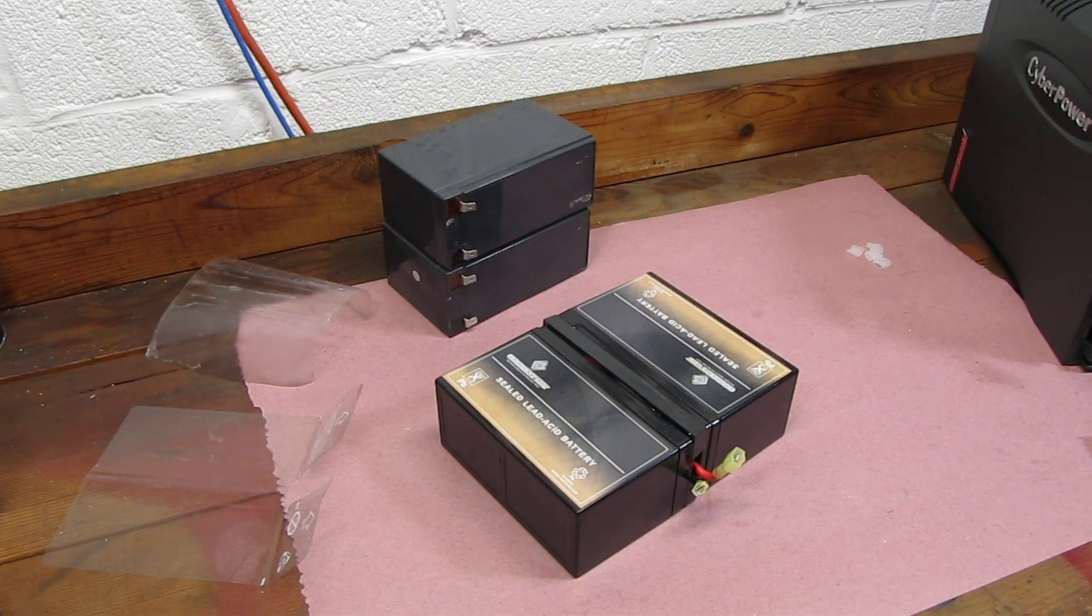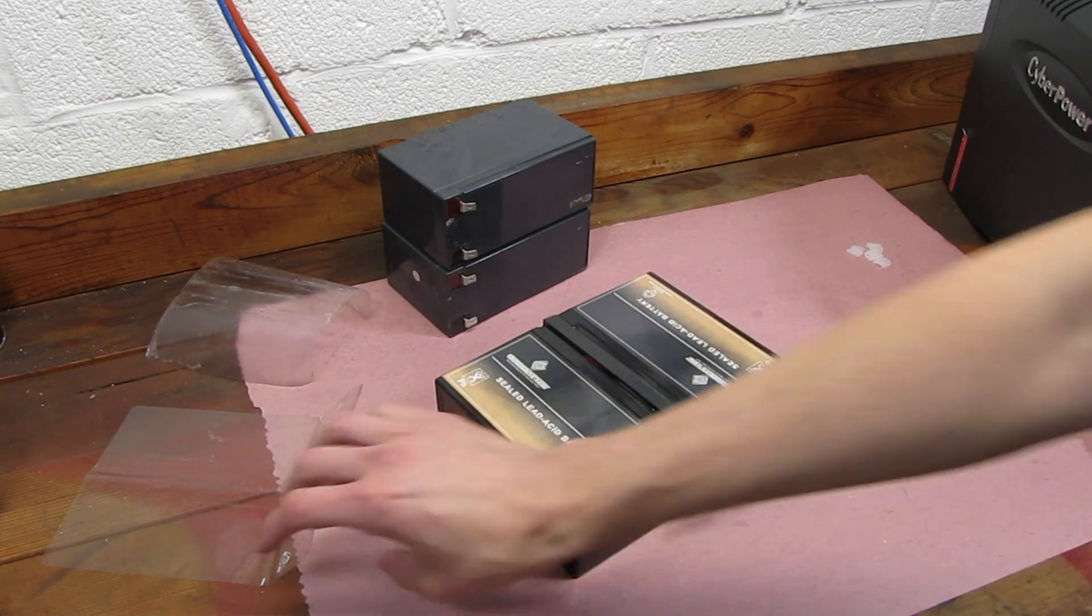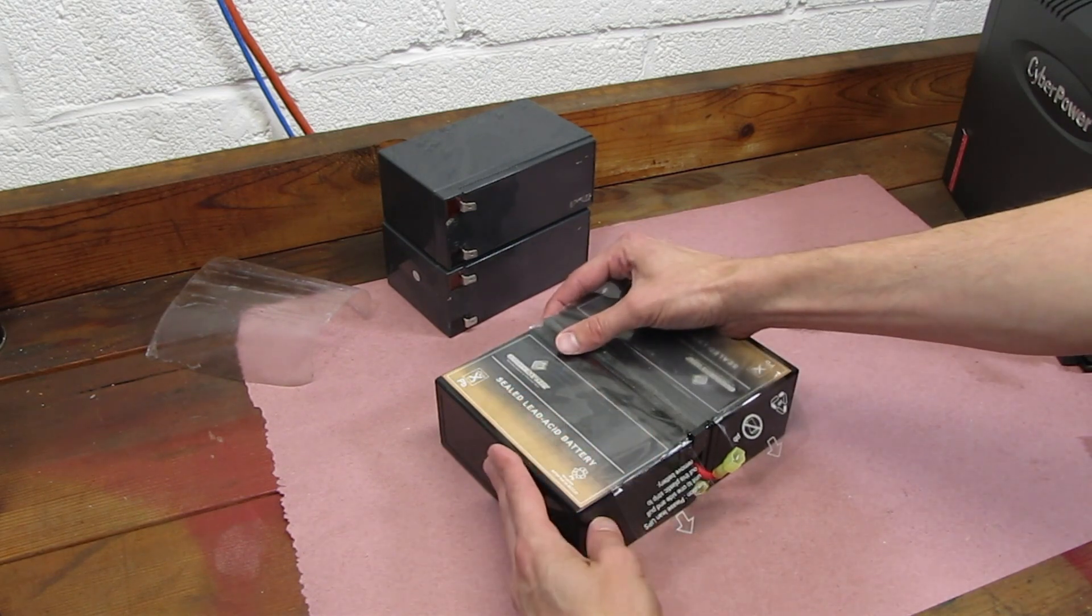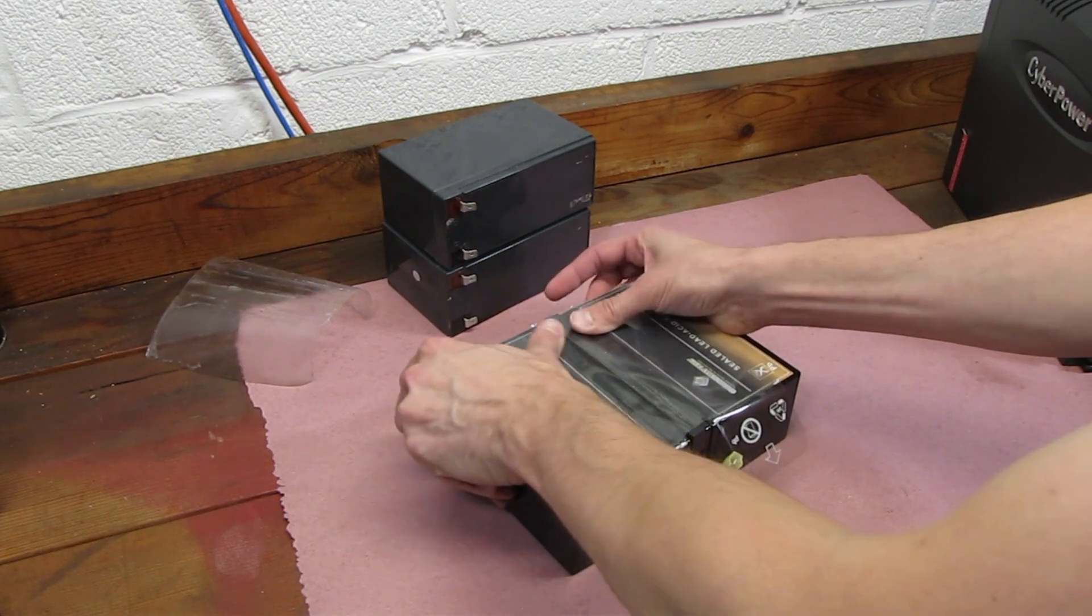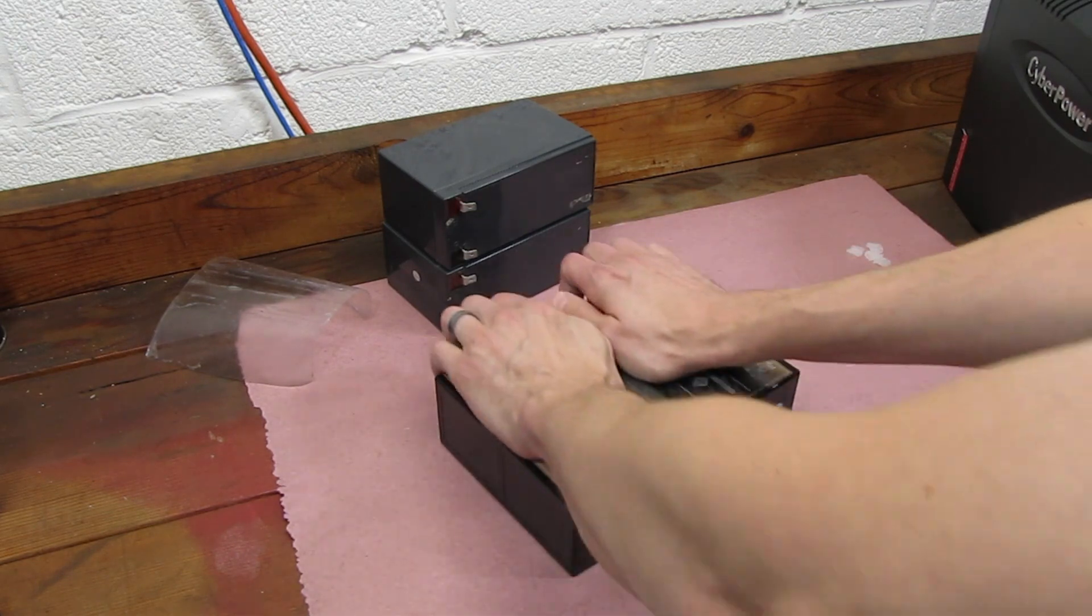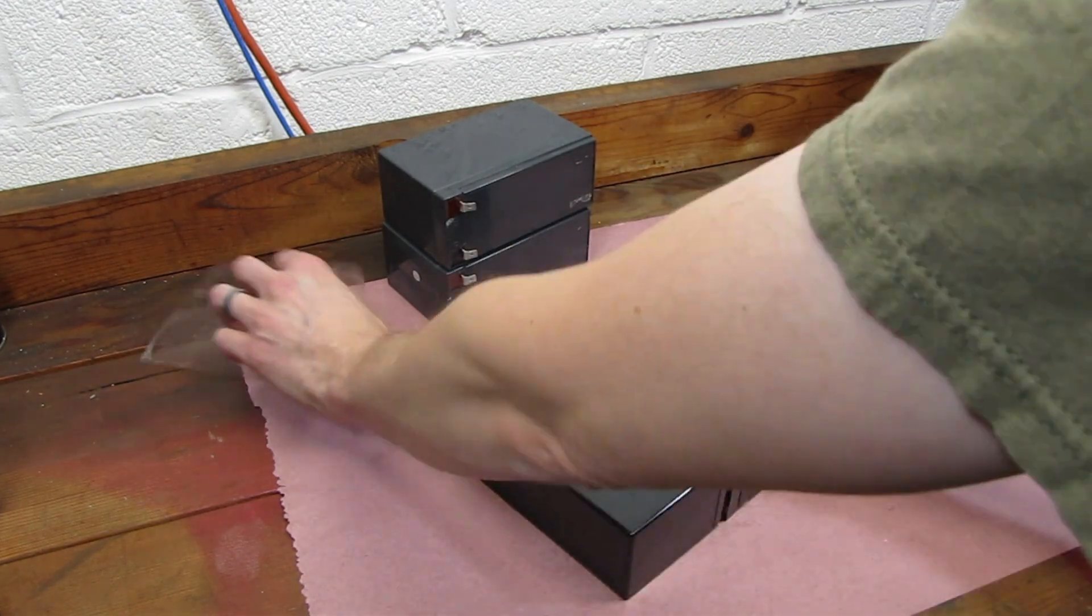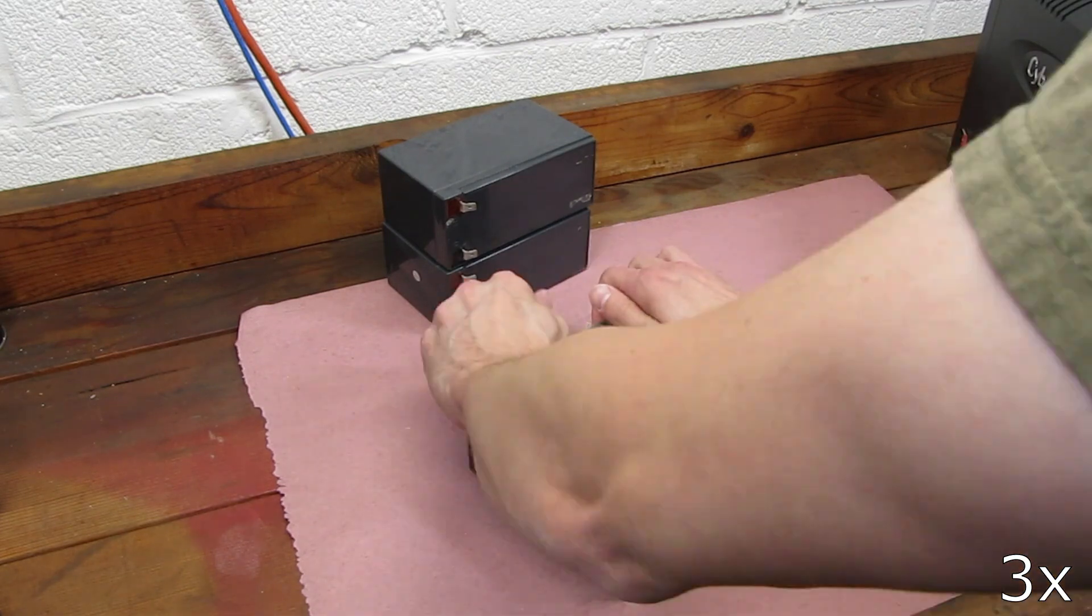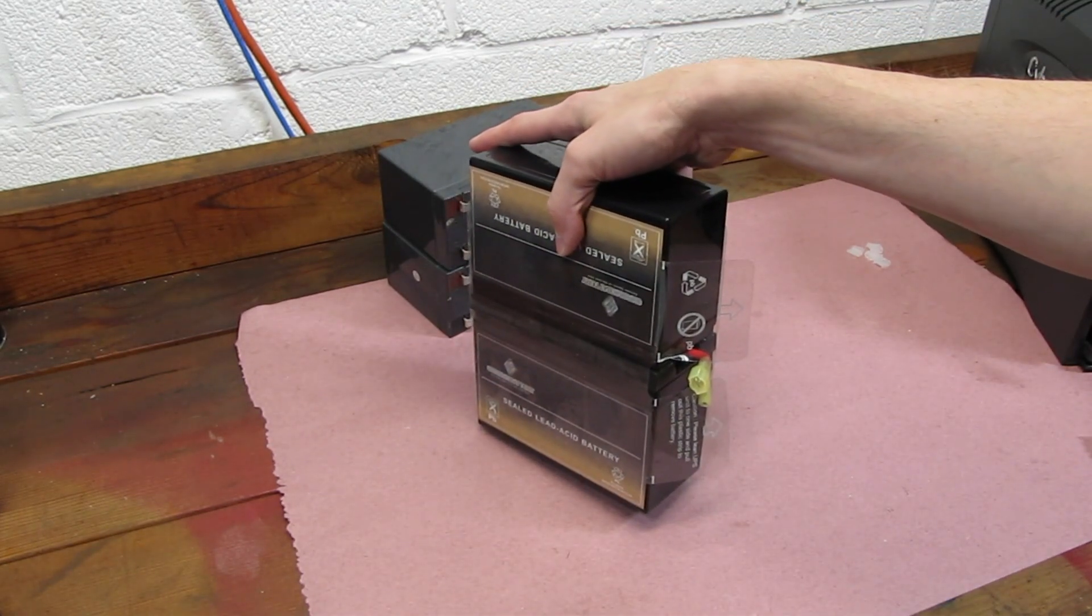That was a bit challenging but now that it's back together we can reattach the plastic if it's in good shape. If it isn't, I usually use clear packing tape and some scissors to wrap the whole pack. And there we go, pack with replaced batteries.